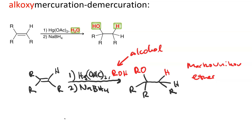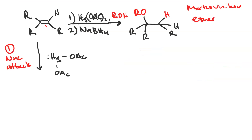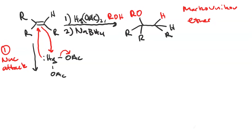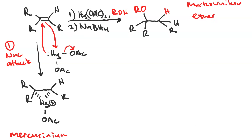Let's look at the mechanism. In the first step, the pi bond of the alkene acts like a nucleophile and attacks the mercury ion. An acetate leaves, and then we have a third curved arrow that represents back attack. The intermediate formed in the first step is a cyclic three-membered cation called a mercurinium cation. We should note we also form the enantiomer where the mercury is on a wedge instead of on dashes.